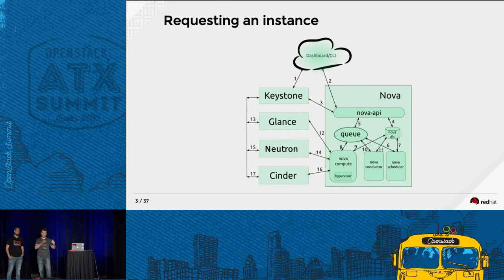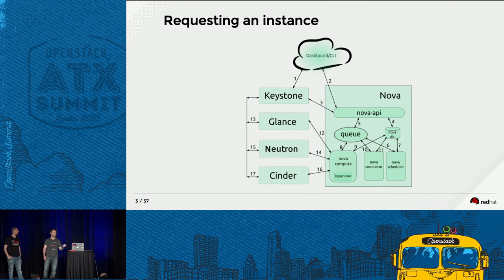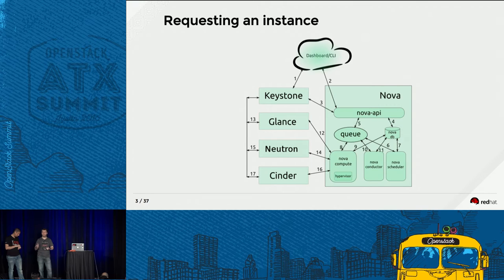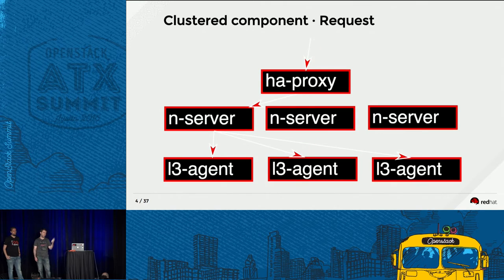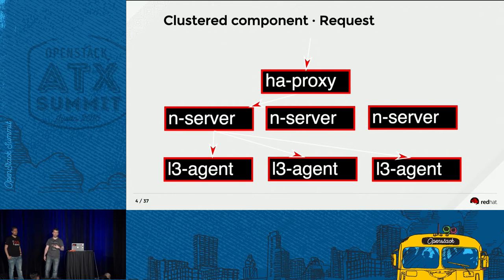Then we start interacting with other components like Neutron and Cinder, and in those interactions we have common patterns like 'I send you a message and wait for you to call me back.' Inside each of those components we also have complex flows. And this is not even accounting for a clustered deployment where requests go through an HA proxy and can land on any of your servers, then be delivered to one or more of your agents.